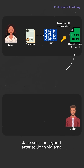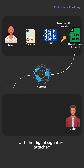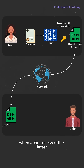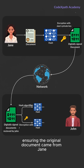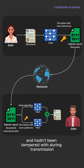Jane sent the signed letter to John via email with the digital signature attached. When John received the letter, he could verify Jane's digital signature using her public key, ensuring the original document came from Jane and hadn't been tampered with during transmission.